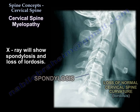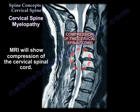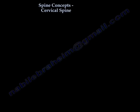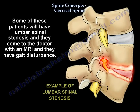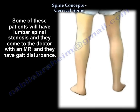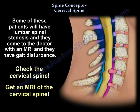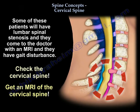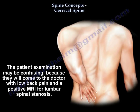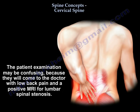MRI will show compression of the cervical spinal cord. Some of these patients will also have lumbar spinal stenosis — they come to you with an MRI and gait disturbance. Check the cervical spine and get an MRI of the c-spine, because the exam may be confusing: they may present with low back pain and a positive MRI for lumbar stenosis.